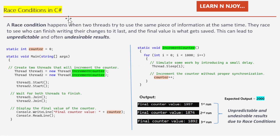Let's understand with an example. This code depicts a race condition. In this example, we have a counter variable shared between two threads, and each thread increments it 1000 times. However, there is no proper synchronization, which can lead to unexpected results. There is a counter variable of int data type initialized with the value zero: `static int counter = 0`.